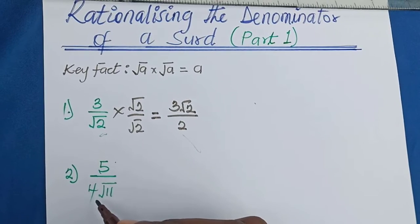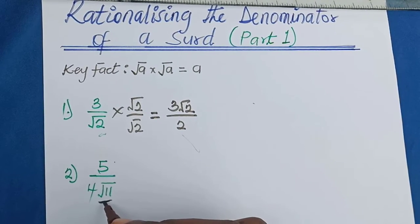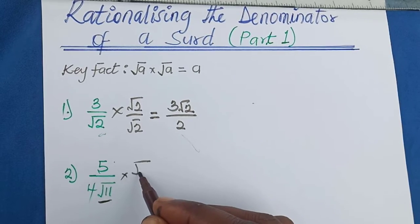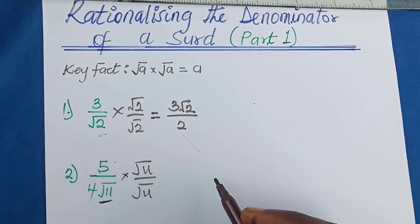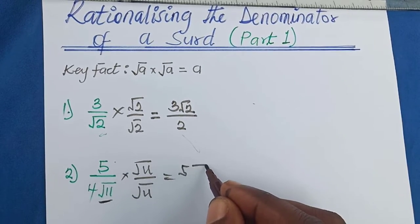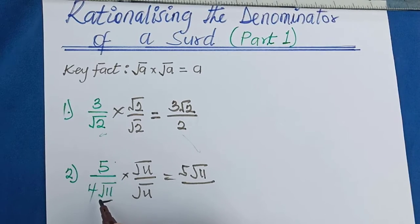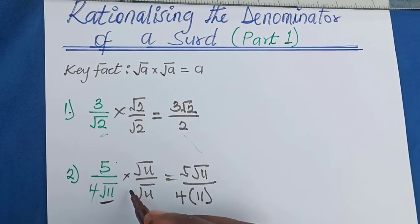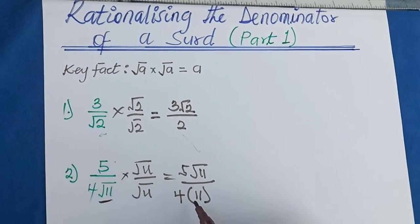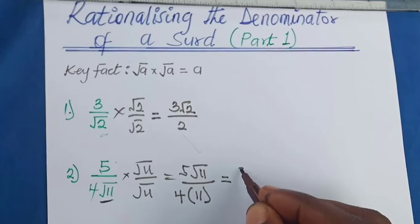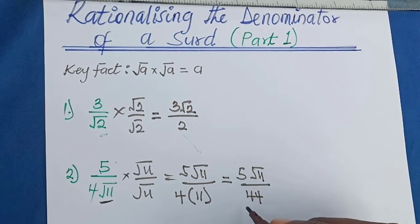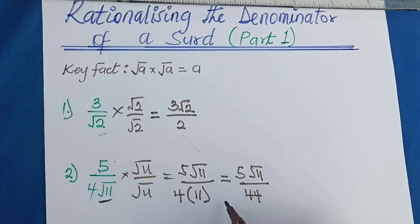In the next example, the denominator contains root 11, which makes it irrational. So we multiply both the numerator and denominator by the rationalizing factor of root 11, which is root 11. This gives us 5 times root 11 in the numerator, which is 5 root 11. In the denominator there is a hidden 1, so we have 4 times 1 which is 4, and root 11 times root 11 which is 11. Then 4 times 11 gives us 44. So we get 5 root 11 over 44, and 44 is a rational number.